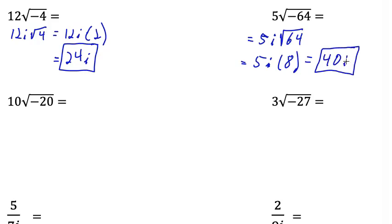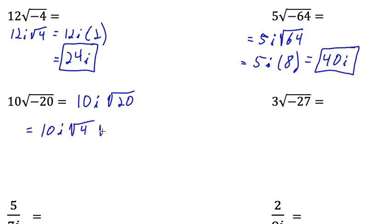Now when you work with i, remember that i is a number — it's not a variable. It equals the square root of negative 1. Here we have a 10 in front of a negative square root. Let's start by taking care of that negative sign, so this is equal to 10i times the square root of positive 20. Are there any perfect square roots that are factors of 20? Yes, 4. So this equals 10i times the square root of 4 times the square root of 5. The square root of 4 equals 2, so this is 10i times 2 times the square root of 5. Multiplying 10 times 2 gives us 20i times the square root of 5.